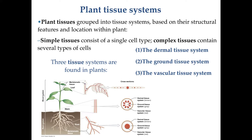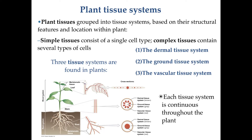One thing that is not very intuitive is that all three tissue systems — dermal, ground, and vascular — are continuous throughout the entire body of a plant. They are not separated; what we see above ground and below ground is simply a continuation of the same tissues.